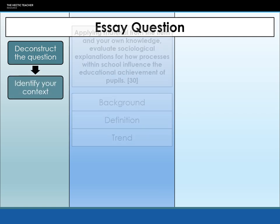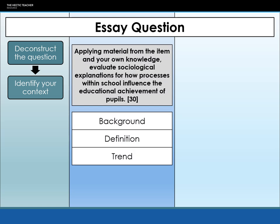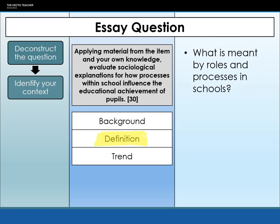That leads us on to identifying the context. The context opens the essay to the examiner, shows the examiner you know what you're talking about, and puts them in the mindset that you are going to write about what they want — and not something completely random. With this question, our area of education is roles and processes, so we're going to have to do a definition, because anyone outside of education is not going to know what we mean by roles and processes in schools. Our context is answering the question: what is meant by roles and processes in schools? Here we're talking about the procedures, the way that the school works, and how that influences educational achievement.